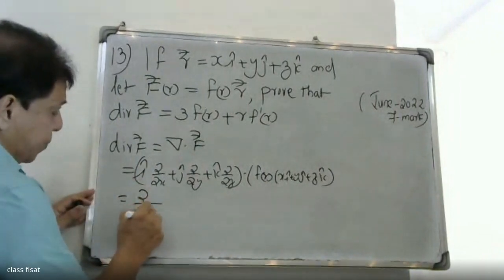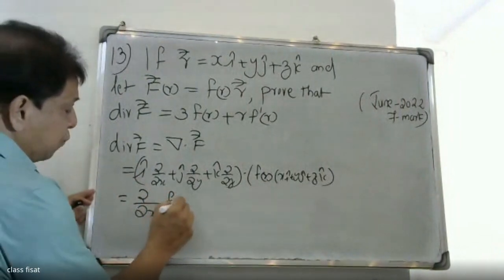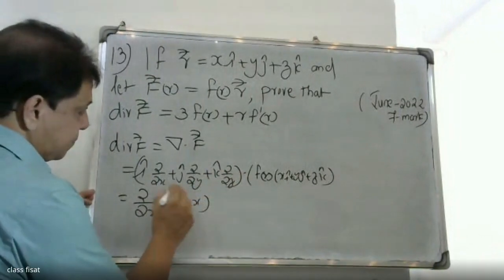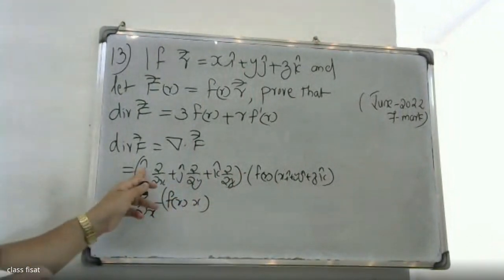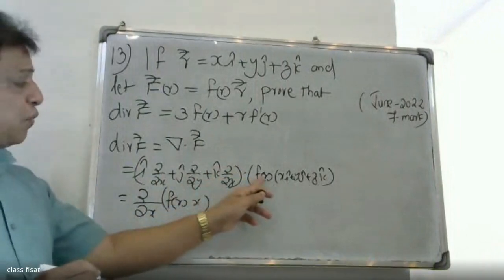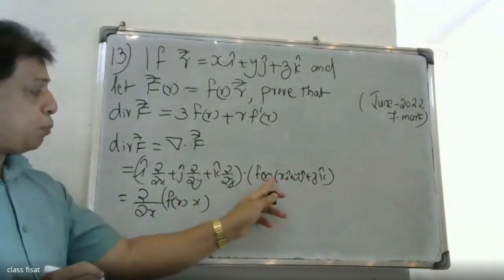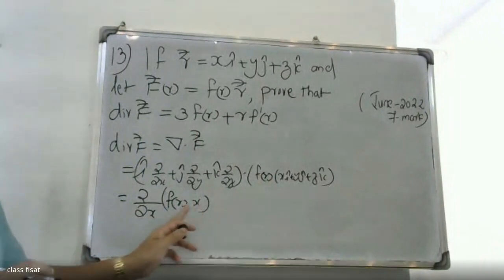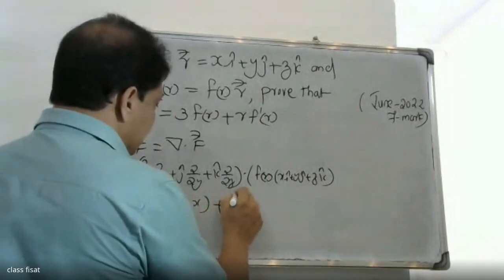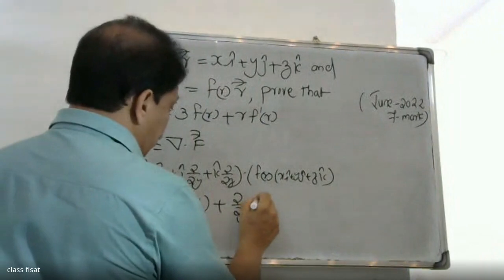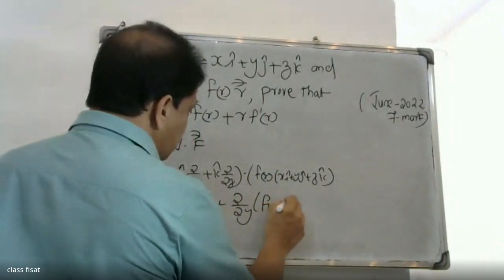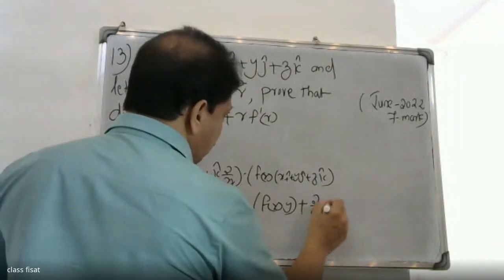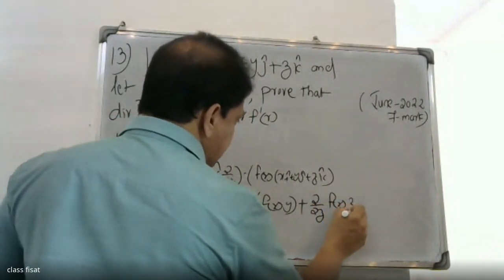Expanding, we get ∂/∂x of f(r)·x plus ∂/∂x of f(r)·y plus ∂/∂x of f(r)·x, and similarly for the y and z terms, with the cross terms being zero.